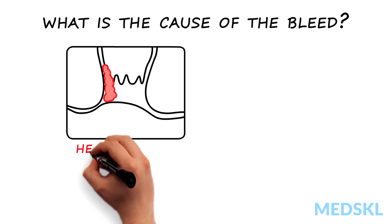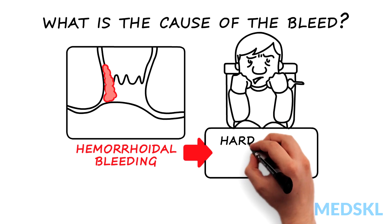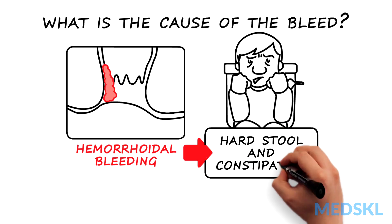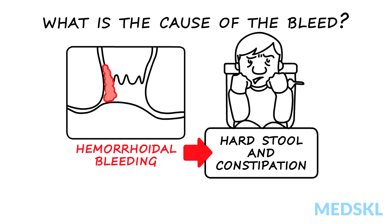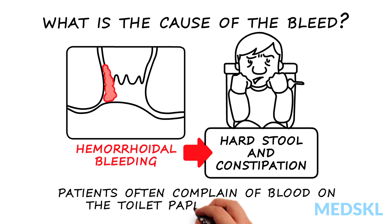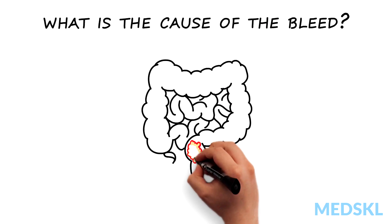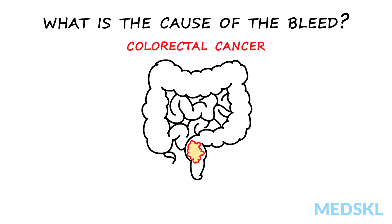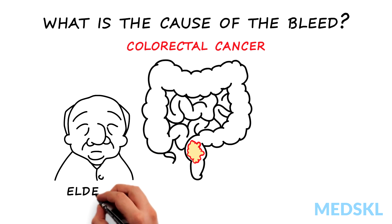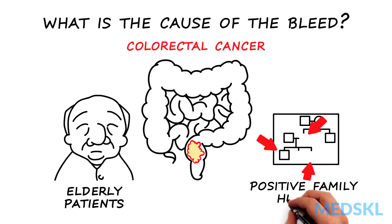Hemorrhoidal bleeding is also frequent and typically occurs with hard stools and constipation. Patients will often complain of blood on the toilet paper after wiping. Always consider the possibility of colorectal cancer, especially in elderly patients or those with a positive family history.